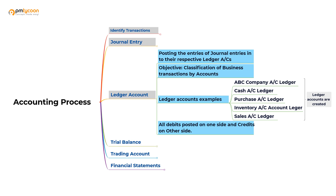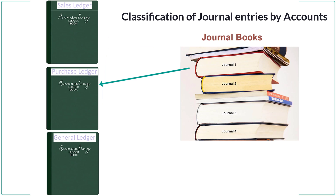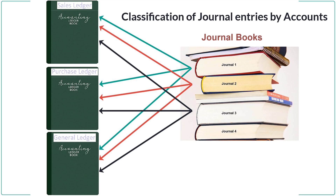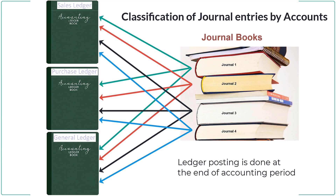Hence they are called ledger accounts. You may have heard the word called ledger posting. Ledger posting is nothing but the process of transferring — the process of picking up each entry in the journal book and recording it in the ledger. We do it at the end of the accounting period; we don't usually do it in the beginning.